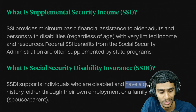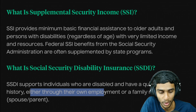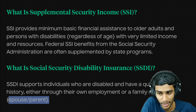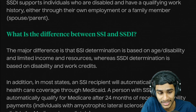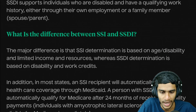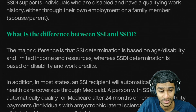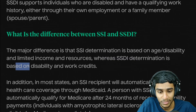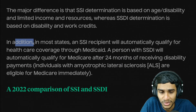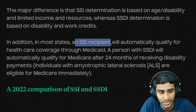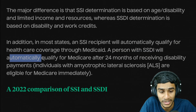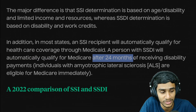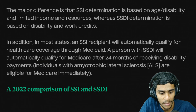Social Security Disability Insurance (SSDI) supports individuals who are disabled and have a qualifying work history, either through their own employment or a family member such as a spouse or parent. The major difference between SSI and SSDI is that SSI determination is based on age or disability and limited income and resources, whereas SSDI determination is purely based on disability and work credits. Additionally, most SSI recipients automatically qualify for Medicaid, while SSDI recipients automatically qualify for Medicare after 24 months of receiving disability payments. Individuals with ALS are eligible for Medicare immediately.